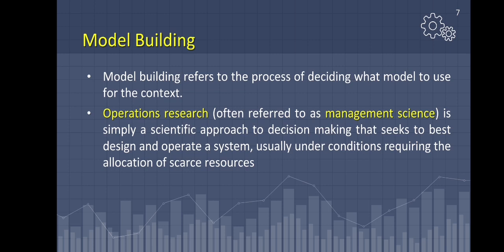We define a system as an organization of independent components that work together to achieve the system's goal. A scientific decision making approach typically involves the use of one or more mathematical models. A mathematical model is a mathematical representation of a real-world situation that can be used to make better decisions or better understanding about the real-world situation.